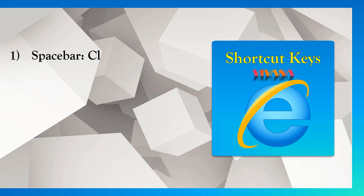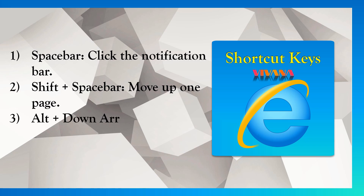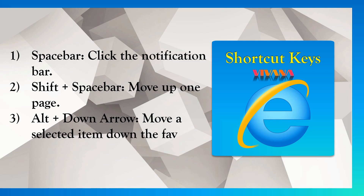1. Space bar: Click the notification bar. 2. Shift plus Space bar: Move up one page. 3. Alt plus Down Arrow: Move a selected item down the favorite list.